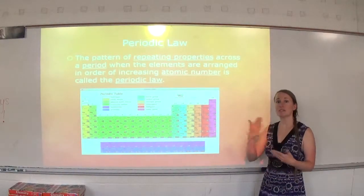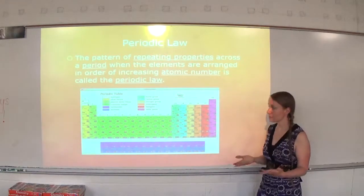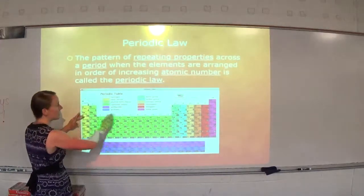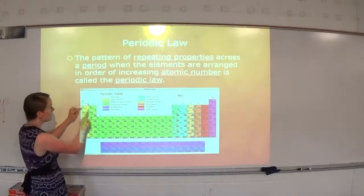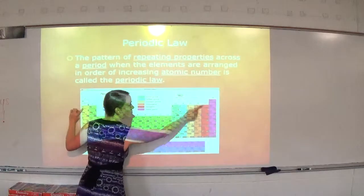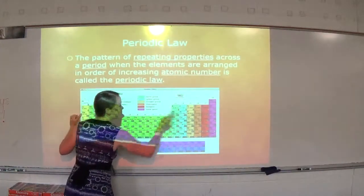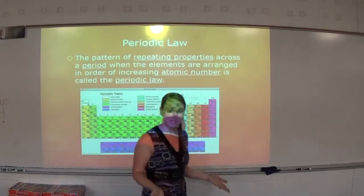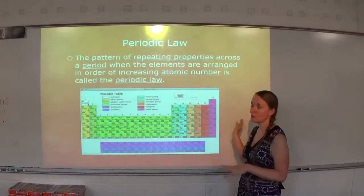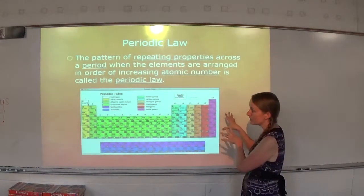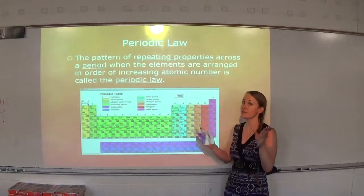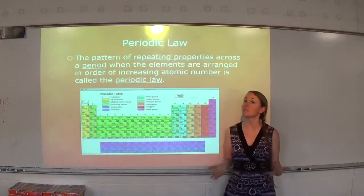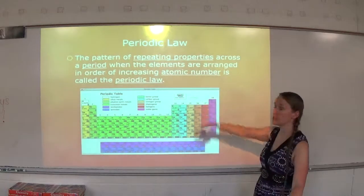Periodic means it happens in regular intervals. Every time we start at a new row on the periodic table, we're going to see the same properties. Are there little variations sometimes between different rows? Yes. But overall, in general, as we move across the rows or the periods, we see a repetition of properties, not the same properties. In a column, we see the same properties. In a row, we see a repetition of properties — and that repetition is called periodic law.